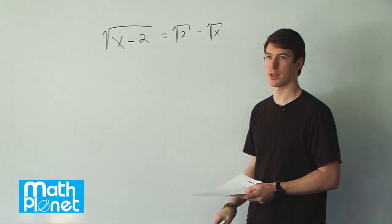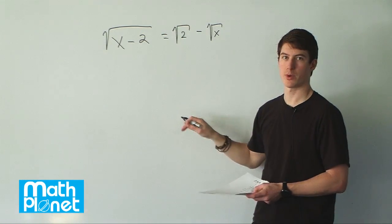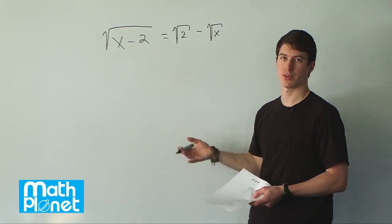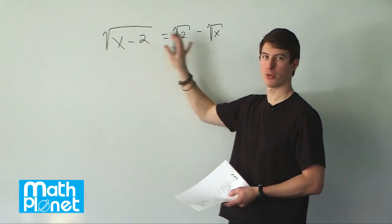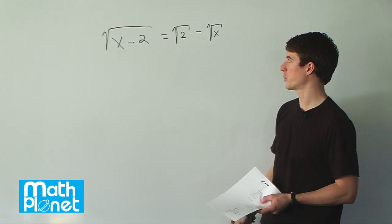We want to get x all by itself. We don't want a square root or any powers on it. So instead of taking a square root to get rid of an x squared, we're going to square both sides to get rid of the square root. If we square both sides separately, what do we get?